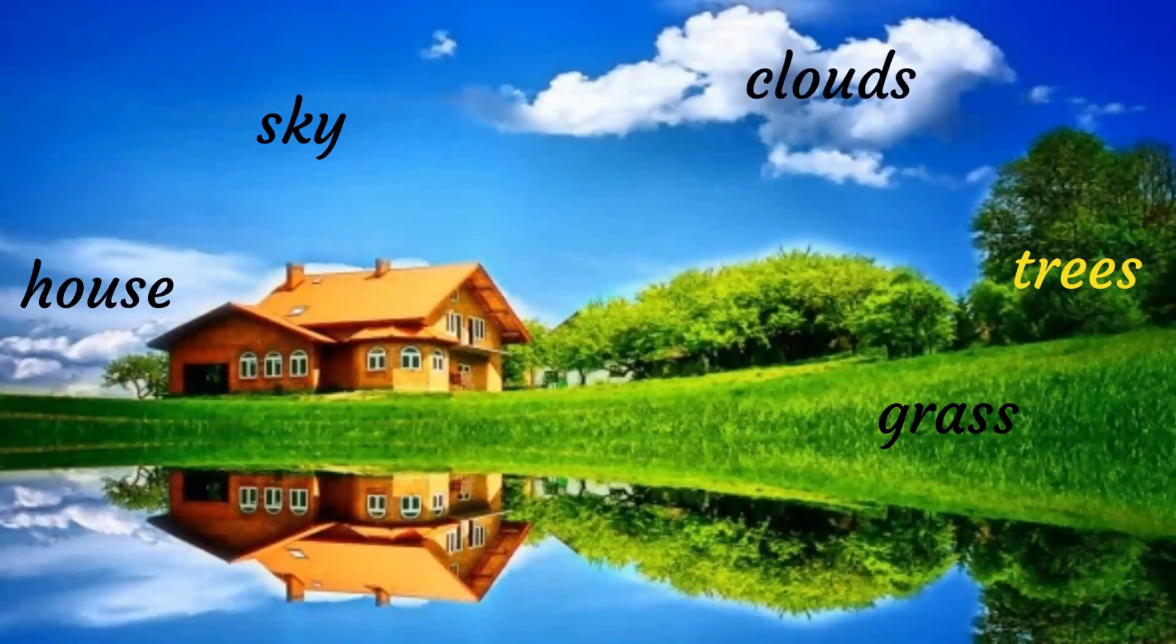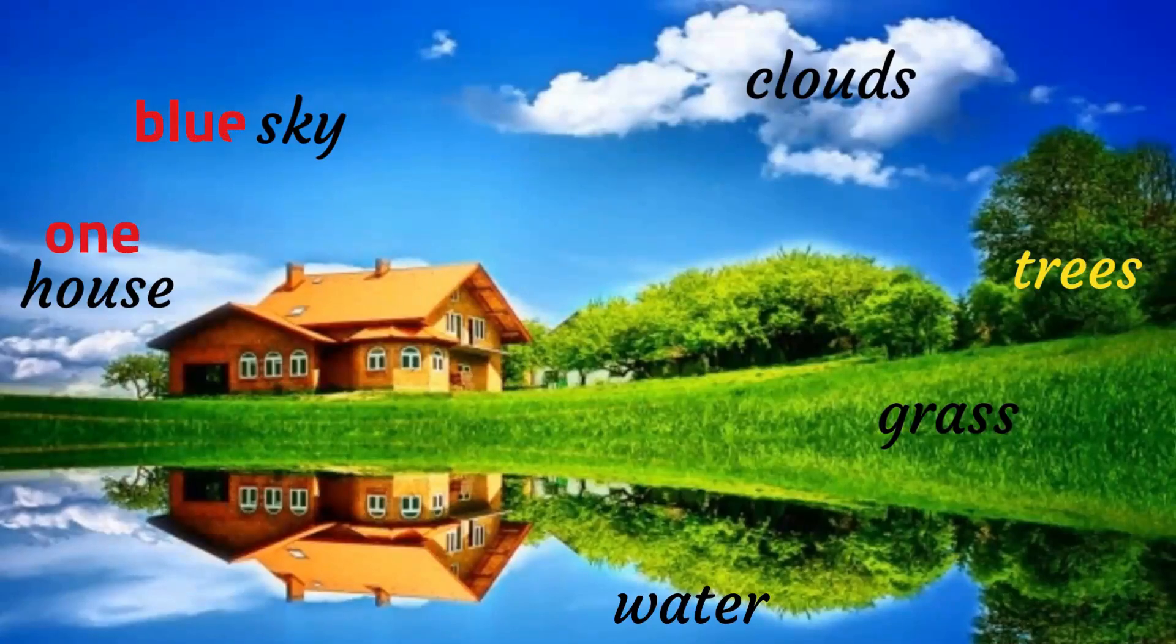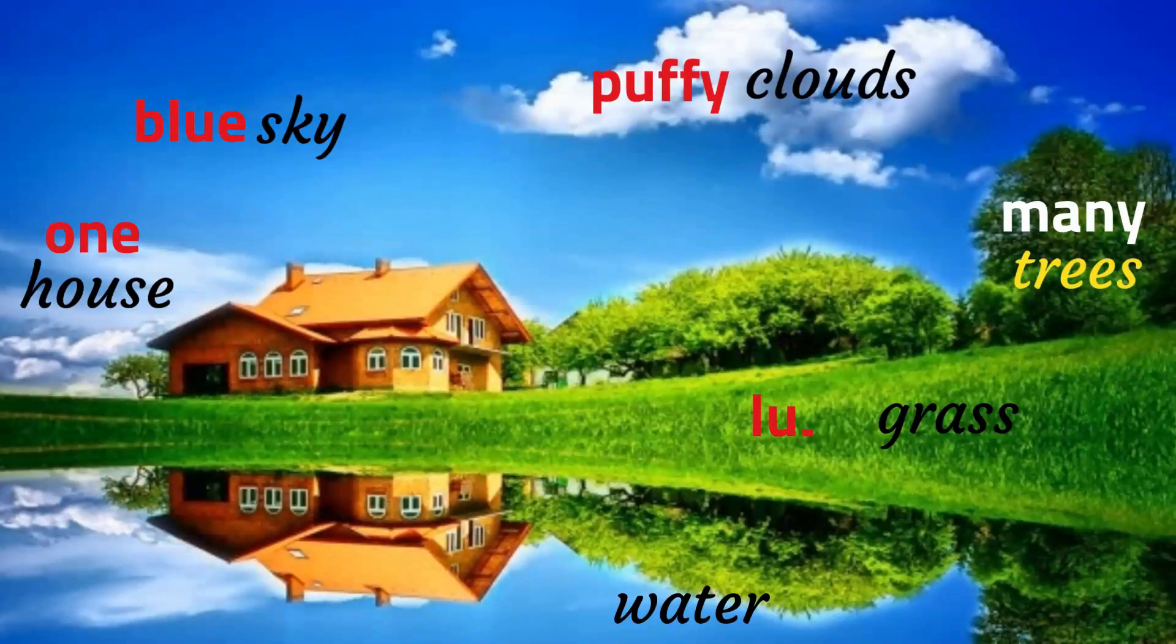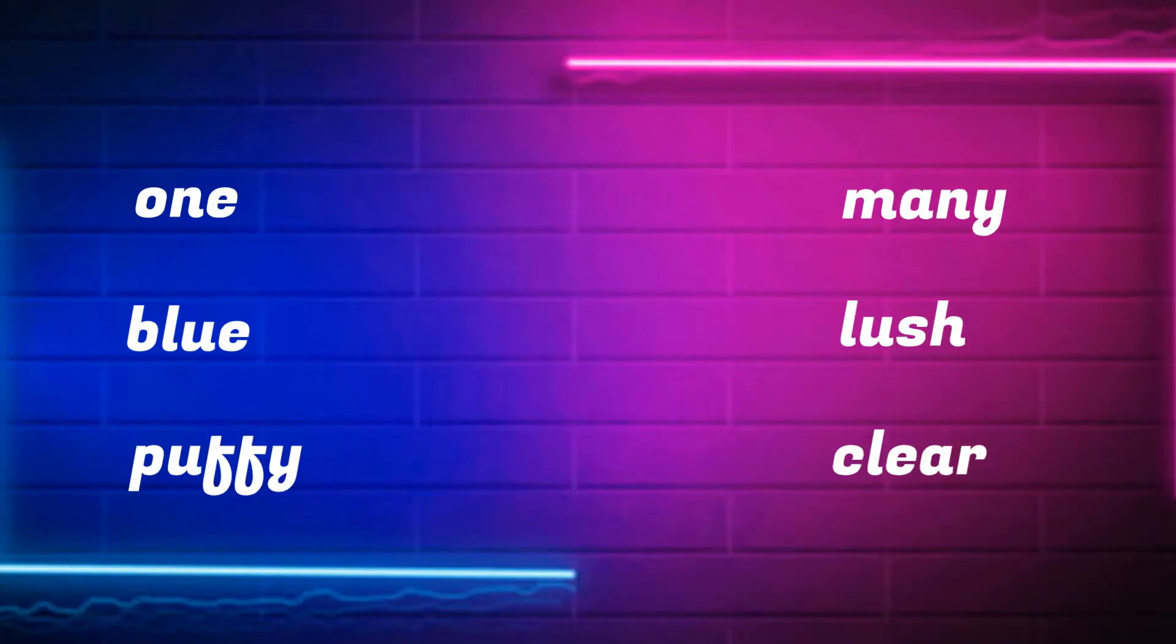Now, here I am adding some words with these nouns like one house, blue sky, puffy clouds, many trees, lush grass and clear water. All these words are describing nouns and they are known as adjectives.